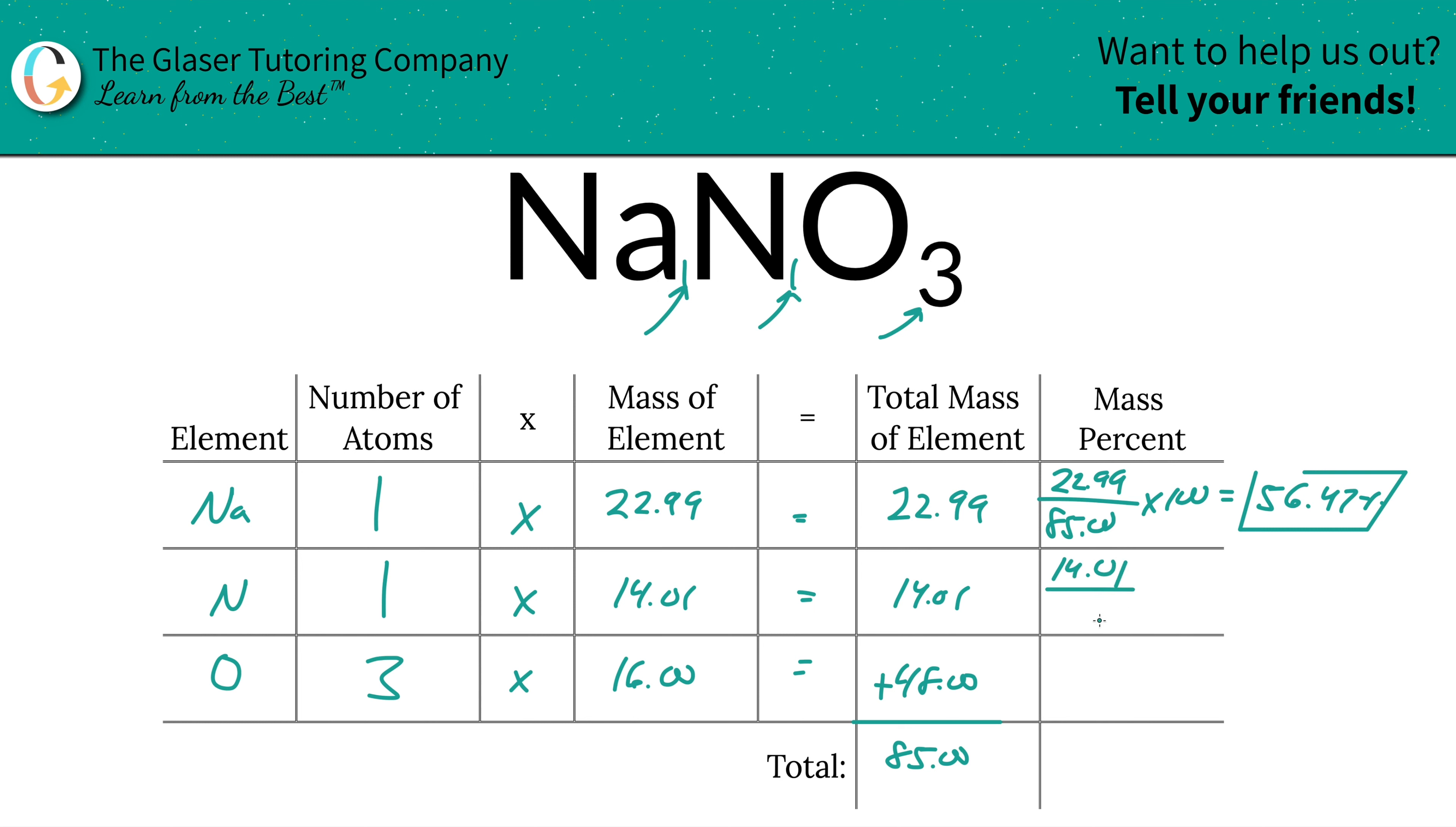Now for nitrogen, we're going to take the total mass of nitrogen divided by the total mass of the entire compound. We're only looking at this column now. That equals roughly 16.48%.